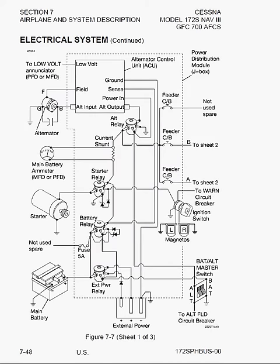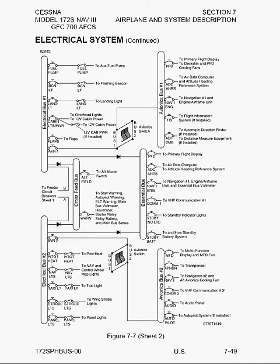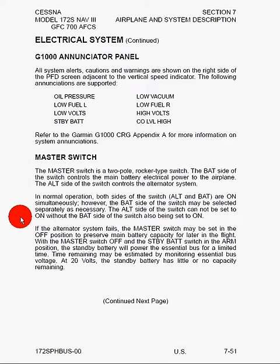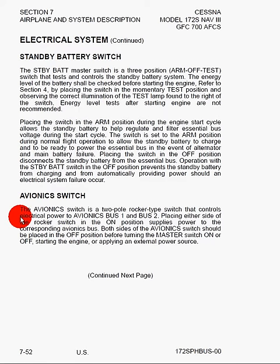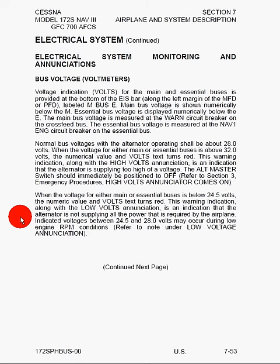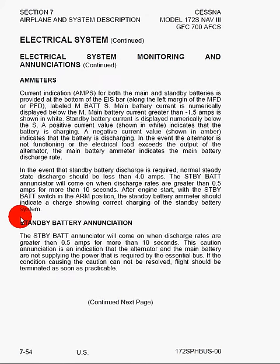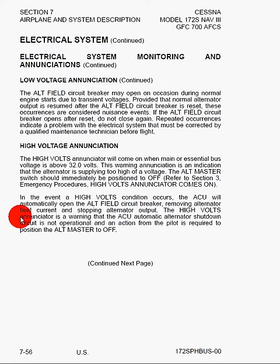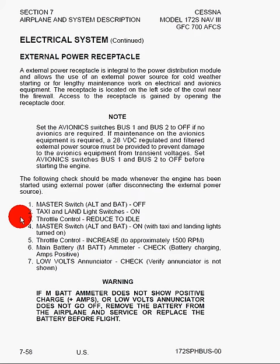We've got the electrical system. The electrical system would be the most hidden from the pilot because it's just wiring, so you don't get quite the same mental picture as you do with the fuel system. Here we can see the electrical system — this is a bit more complicated than the steam gauge or analog Cessna 172s, which had two main bus bars. This one has more because of all the avionics like the Garmin G1000. Here we can see the enunciator panel for the G1000, the master switch, standby battery switch — something new for electronic flight displays. We've got the avionics switch, system monitoring, bus voltage, ammeters, standby battery enunciation, low voltage, high voltage, circuit breakers and fuses, external power receptacle, exterior lighting, and interior lighting.